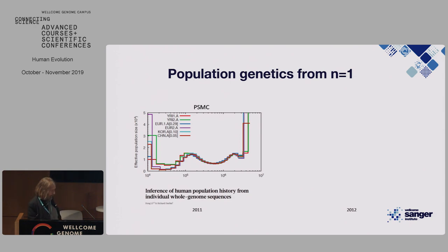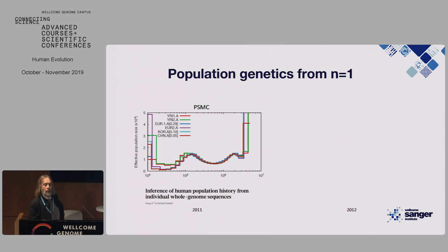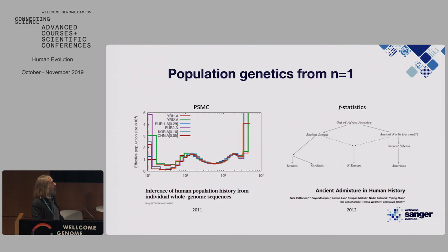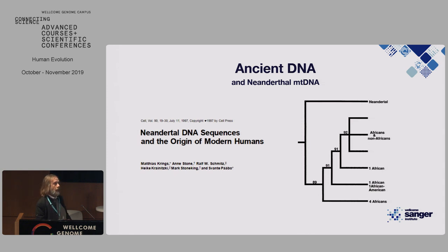There have been some great analytical advances, some based on the intuition that a single genome contains an enormous amount of information — allowing inference of population size history and showing a difference between African and non-African populations over time. Or the use of f-statistics that come up on several occasions.